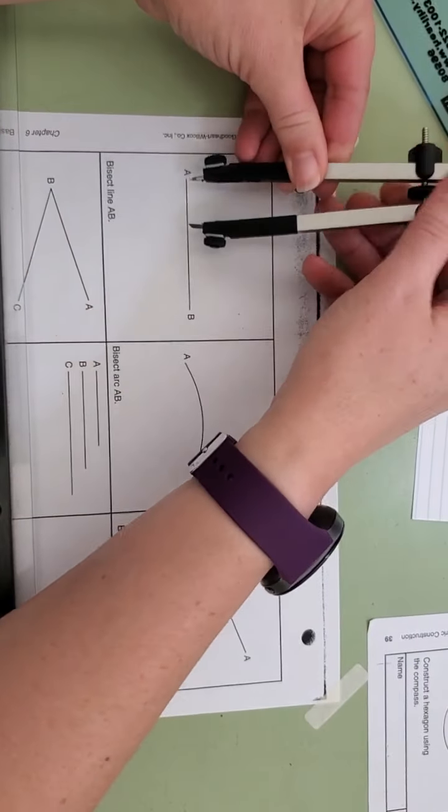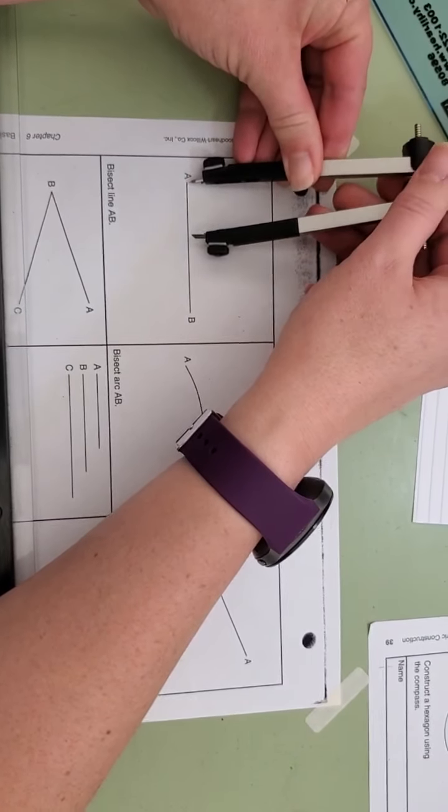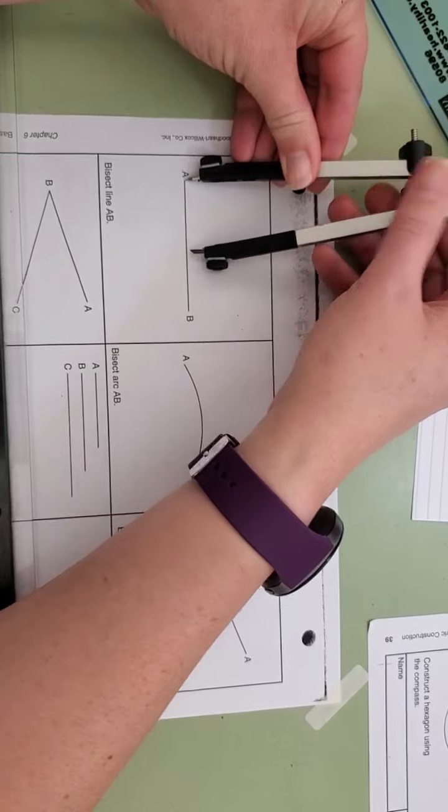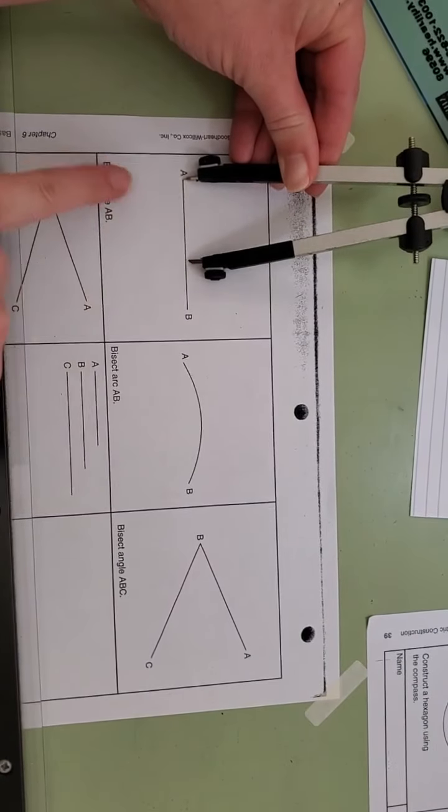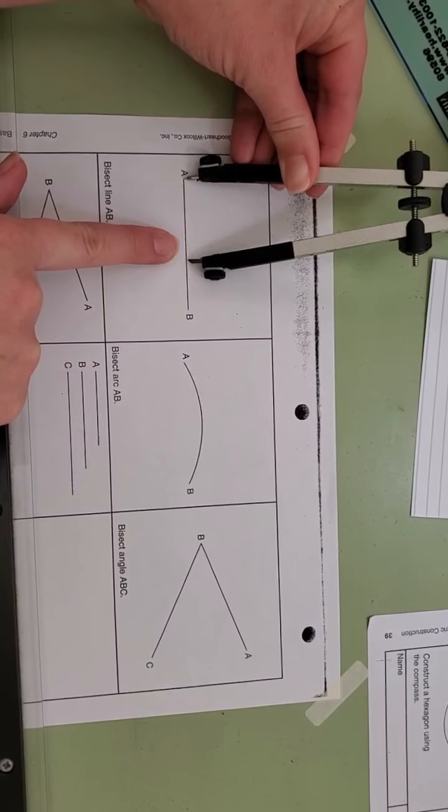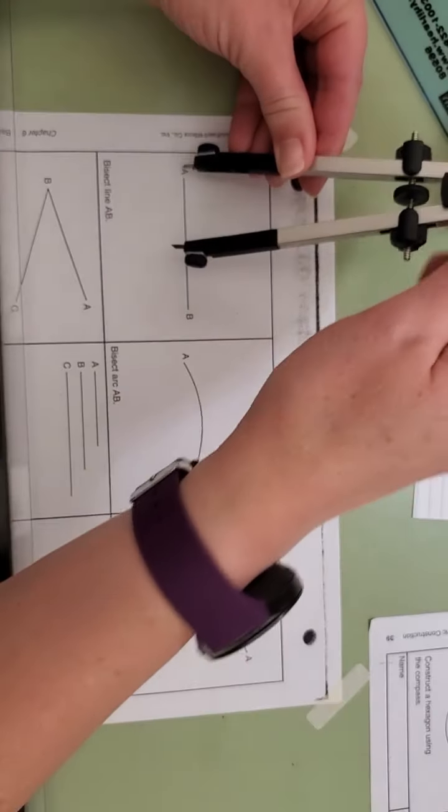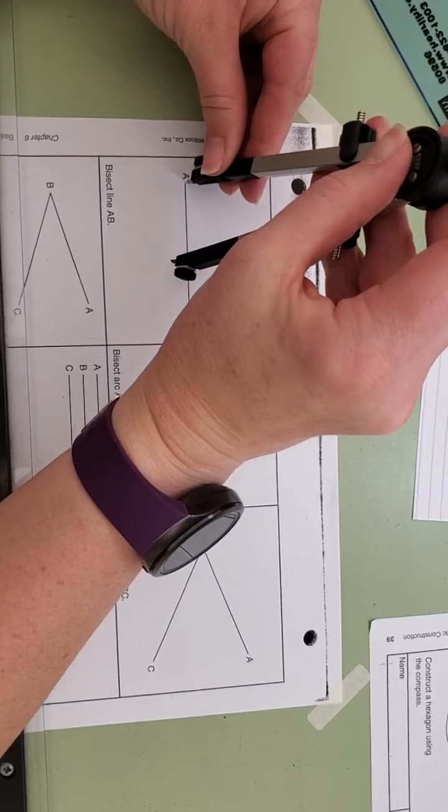First I'm going to take my compass and I'm going to open it up using the wheel and I'm going to extend it so that the compass lead, the graphite, is out more than what visually looks like a halfway point. This is kind of a guesstimate.